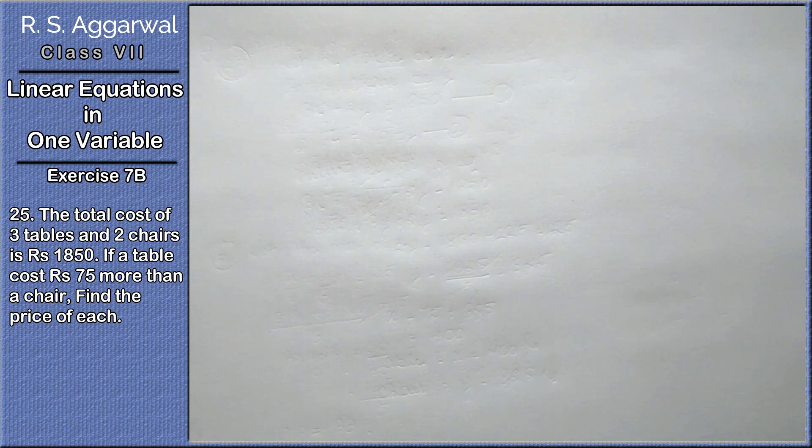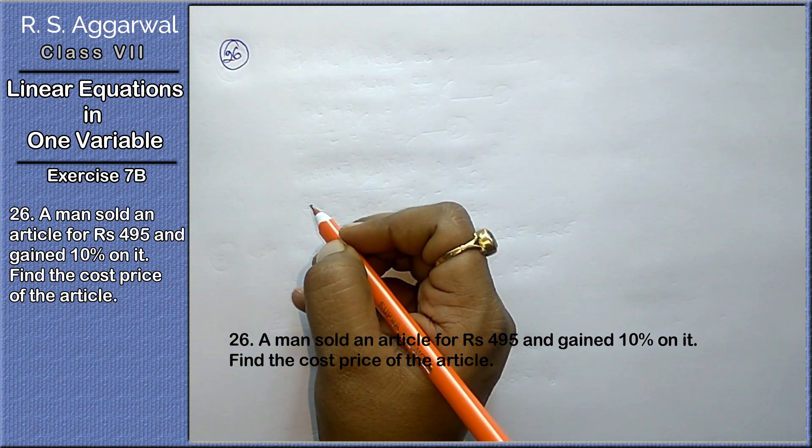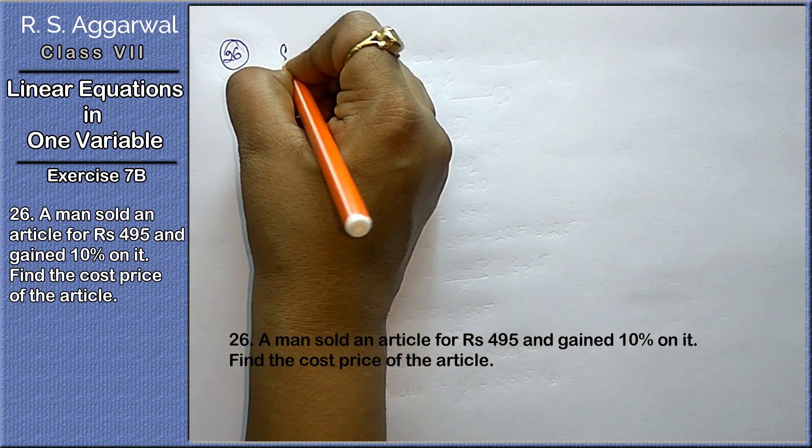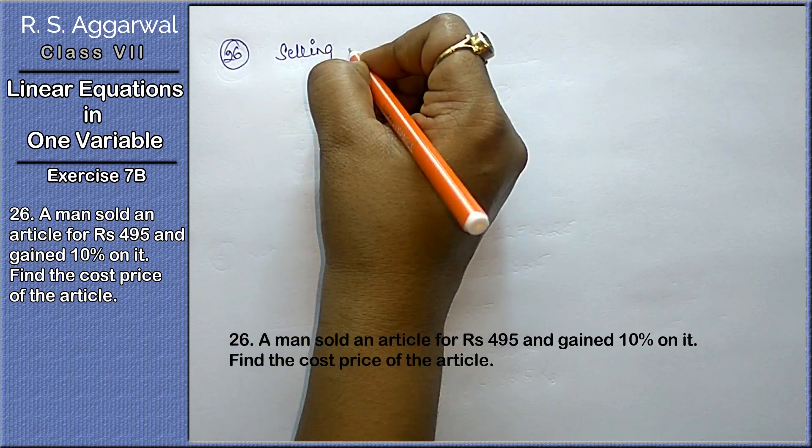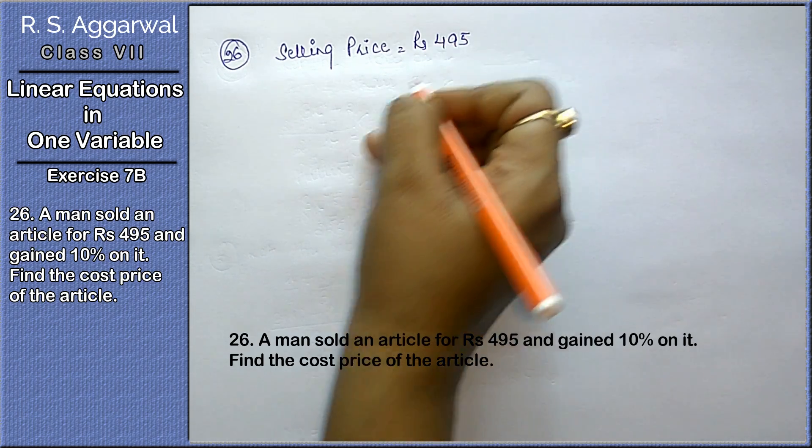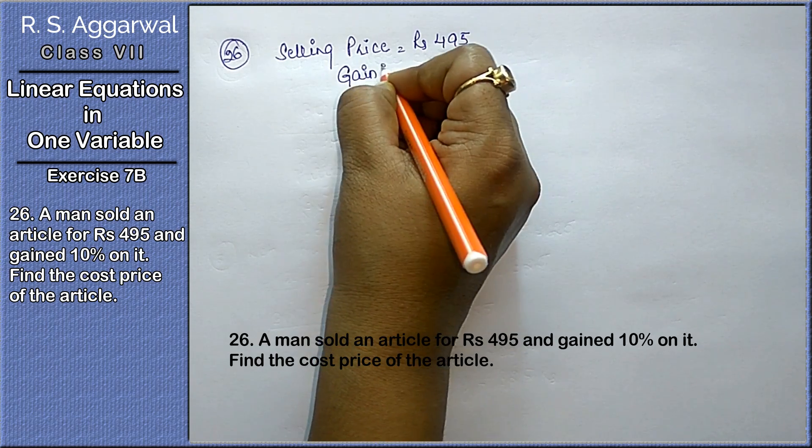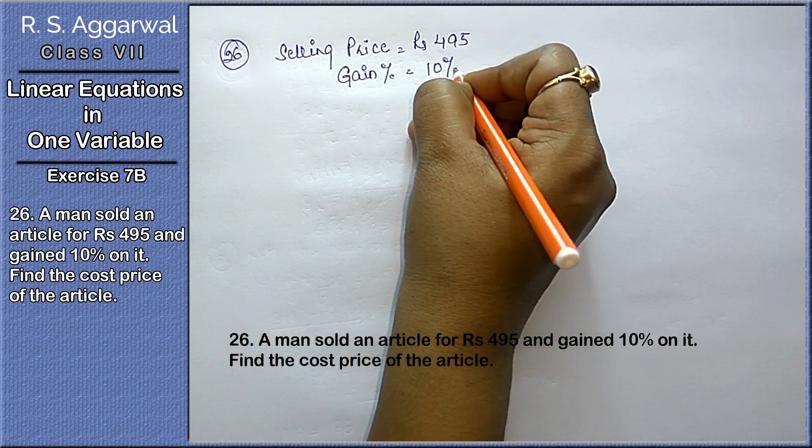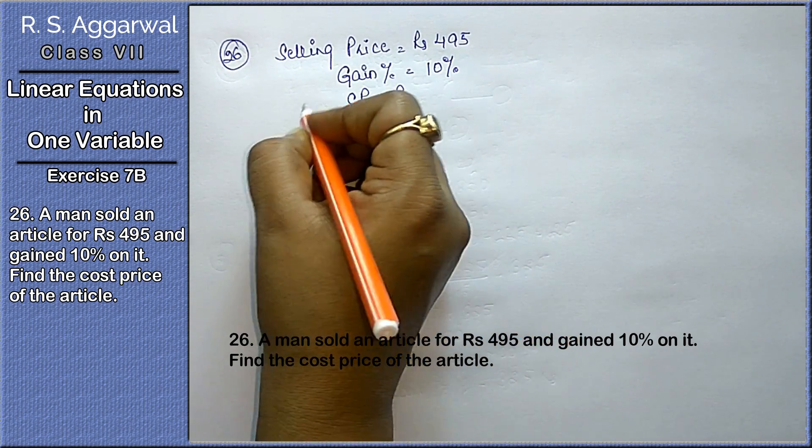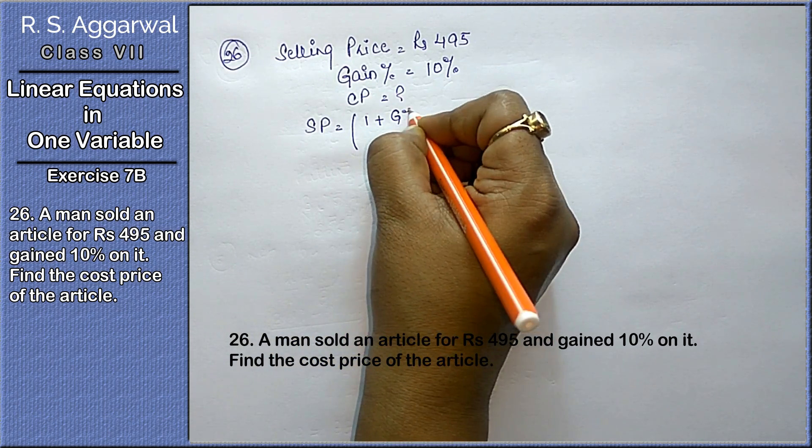26th question is: a man sold an article for rupees 495. That means selling price is 495 rupees. And he gained 10% on it. The gain percentage is given as 10%. Now we have to find out the cost price. Friends, we have already studied that SP equals to (1 plus gain percent upon 100) into CP.